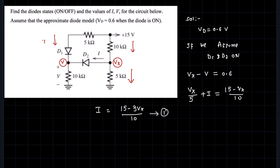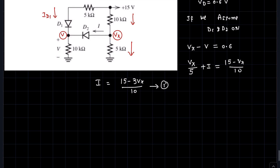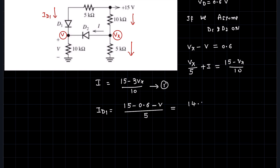Now let's find the current flowing through diode D1, call it id1. Clearly, id1 is nothing but 15 minus the diode voltage drop of D1, which is 0.6 volts when conducting, minus V, all over the 5 kilo-ohm resistor. There are two voltage drops: one across D1 and another across the 10 kilo-ohm resistor. Writing Kirchhoff's voltage law gives the same result, so id1 equals 14.4 minus V over 5.